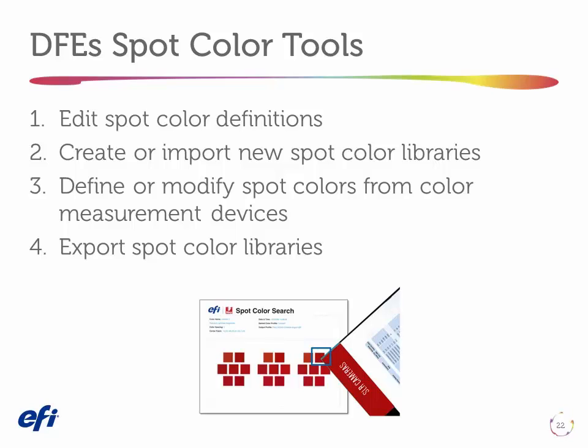We also need to be able to define or modify spot colors using measurements. This is for cases where the customer doesn't know the Pantone color, or maybe it wasn't even printed Pantone in the first place, but they have a business card in their pocket and they want you to match that. Finally, I need to be able to export my spot color library — very important if I'm defining colors on one station and need to split a job across multiple presses or locations geographically.